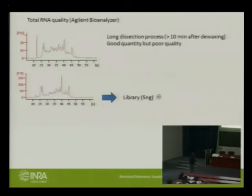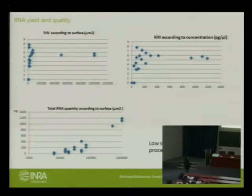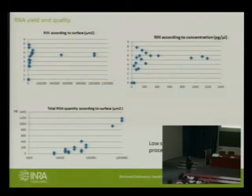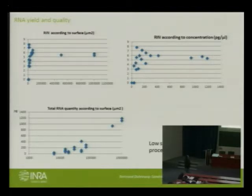On the quality point: when you leave your slides on the microscope for a long time, quality decreases — which is rather normal. We tried to perform a library with relatively low-quality RNA and we failed. We then addressed the quality issue and tested a few things. Regarding quality according to micro-dissected surface: to our great surprise, we have very high variability with low surface micro-dissected areas. Quality stabilizes after a certain quantity, and concentration increases according to surface. The key point is that low surface allows higher speed, but low surface also produces less RNA, so we need to decrease the quantity needed for RNA-seq experiments.